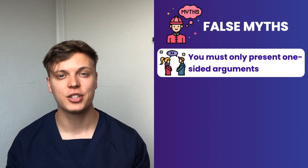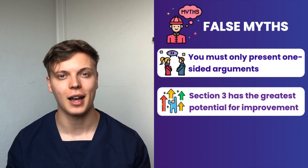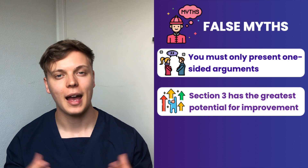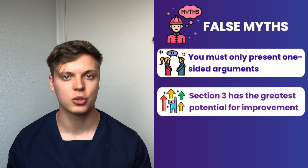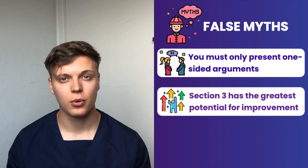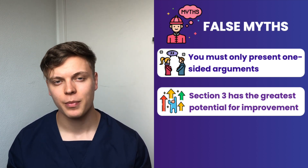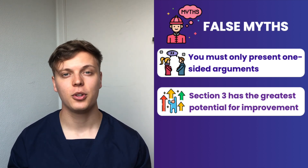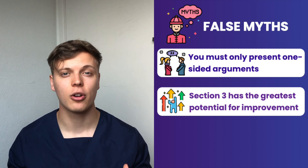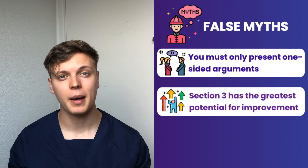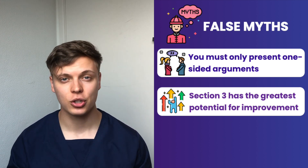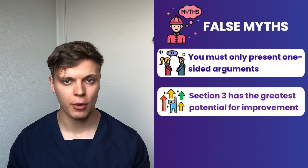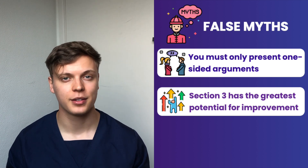The second myth is that BMAT Section 3 offers the greatest opportunity for improvement out of all three sections. For some people this might be the case, as they can improve their essay structure and focus on spelling, punctuation, and grammar. However, for a lot of people their quality of English score won't improve by very much, and the universities they're applying to might not weight Section 3 that heavily. If your universities don't put great emphasis on Section 3, your time might be better spent on Sections 1 and 2. You need to carefully analyze your potential for improvement and allocate practice time accordingly.